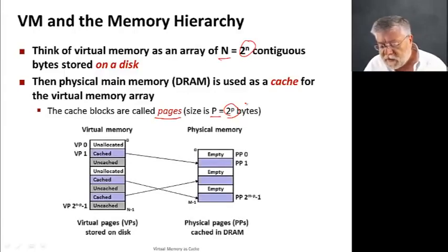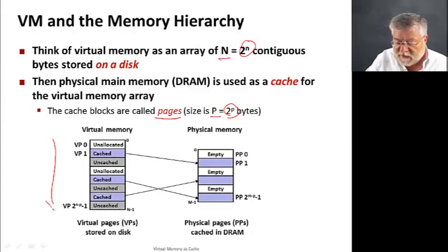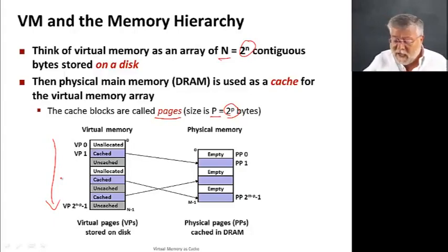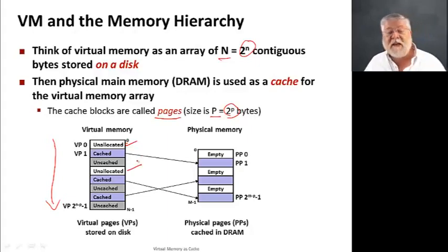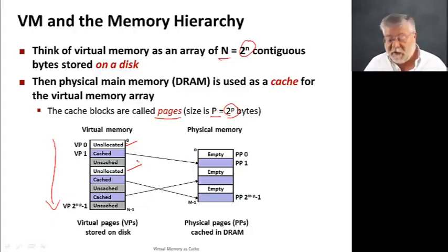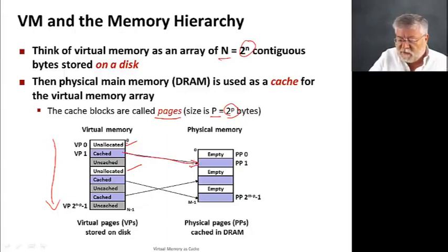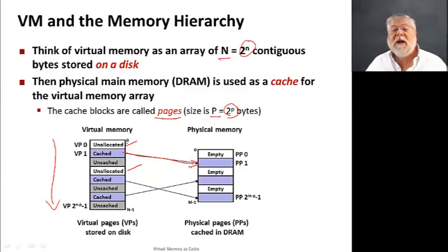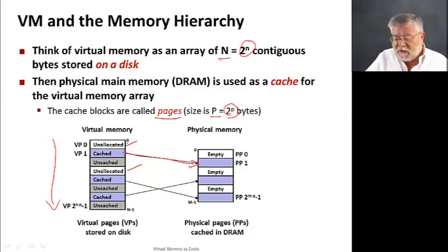Looking at virtual memory as this big array of space — 16 exabytes — we're not going to use all of it. Many of the pieces of virtual memory, these virtual pages, may be unallocated; just space we could address but don't have anything there. Other parts are going to be cached in the physical memory at a particular location. That's the mapping we need to keep track of in our memory management unit.